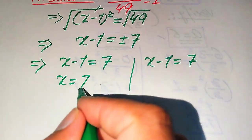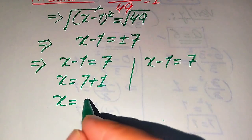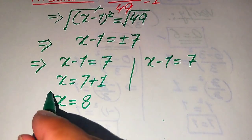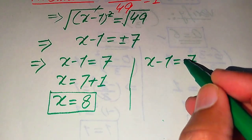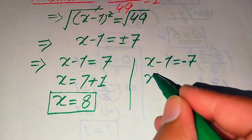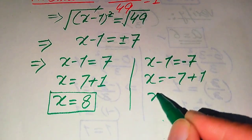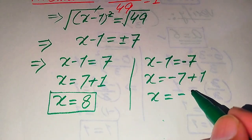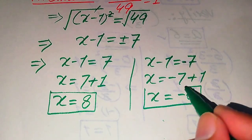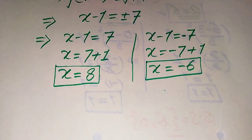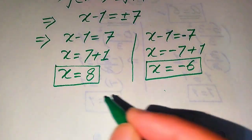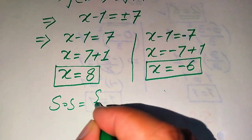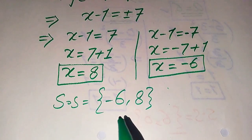From the first case, we move minus 1 to the right hand side and it becomes plus 1, giving x equals 8. From the second case, we move minus 1 to the right hand side, giving x equals minus 7 plus 1, which equals minus 6. From both methods we get the same values of x. Since we already verified both values in method one, we conclude the solution set is {minus 6, 8}.